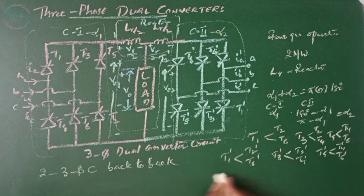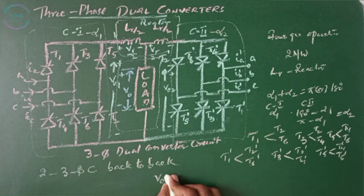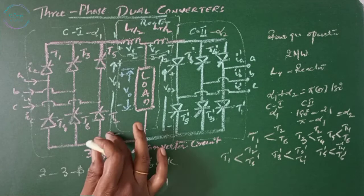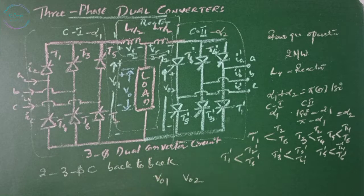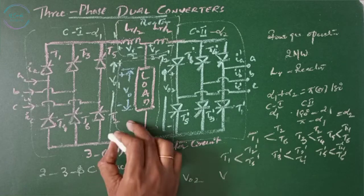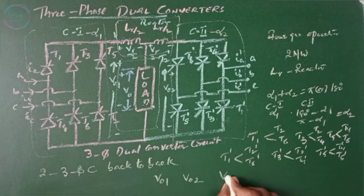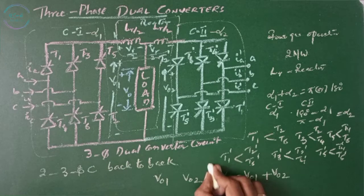We are getting two voltages: V01 from converter 1 and V02 from converter 2. The resultant output V0 is given by V01 plus V02.